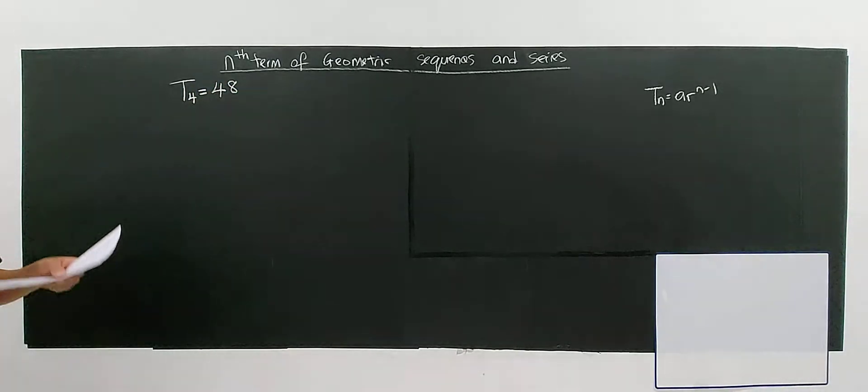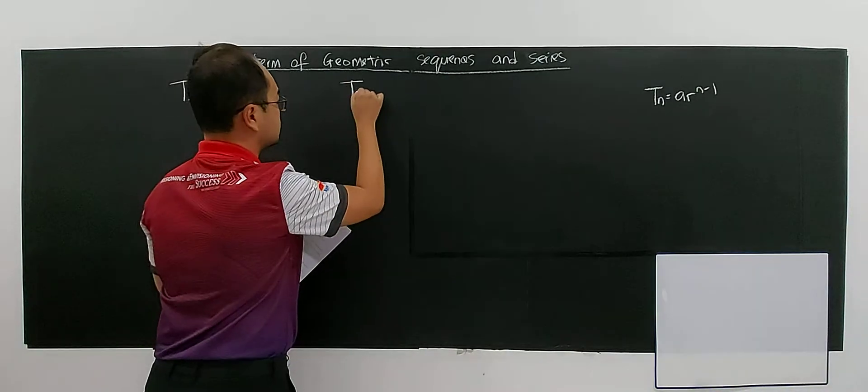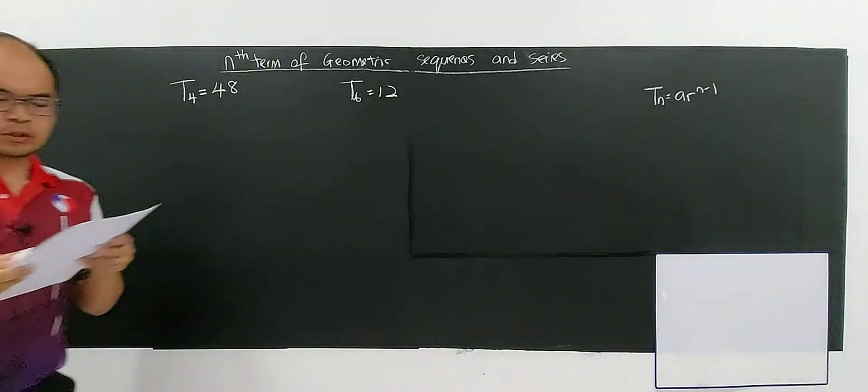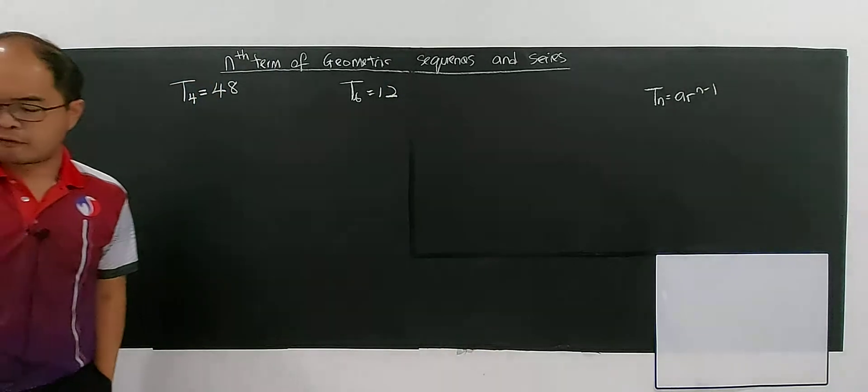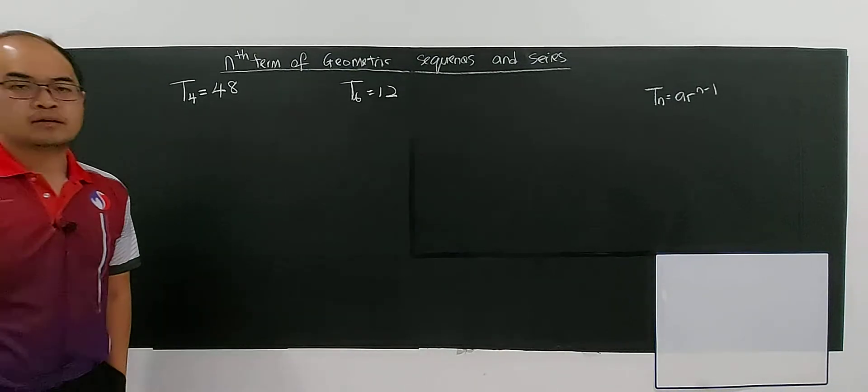The fourth term refers to T4, and the sixth term is 12. The question is: find the possible values of the common ratio and the corresponding values of the first term.